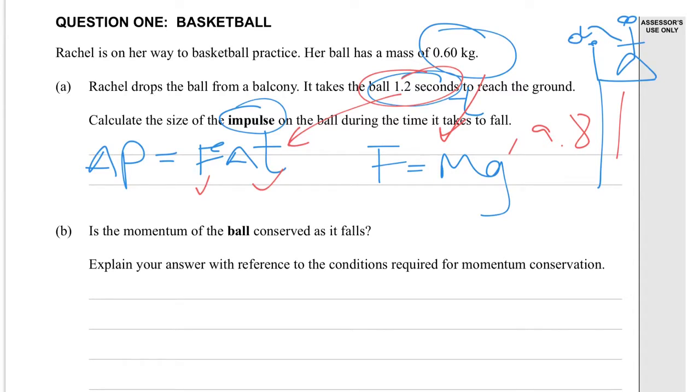Part B. Is the momentum of the ball conserved as it falls? And the answer is no. It's increasing in speed. So V increases, even though mass stays the same. So P equals MV, P must increase as well.